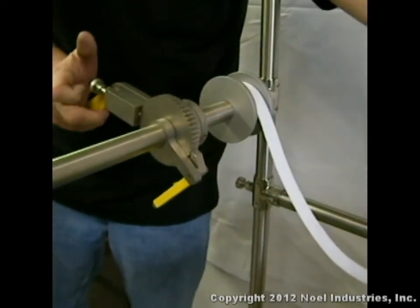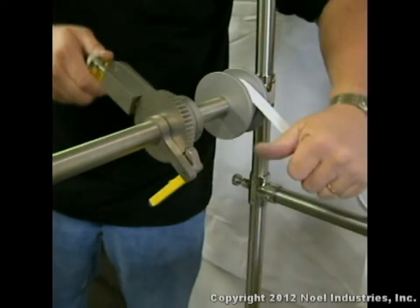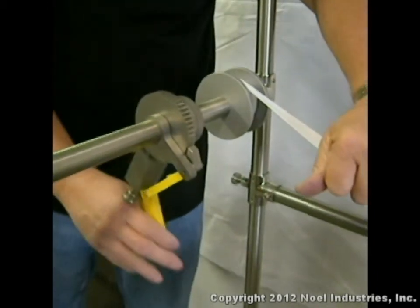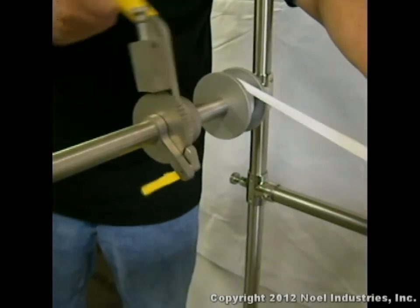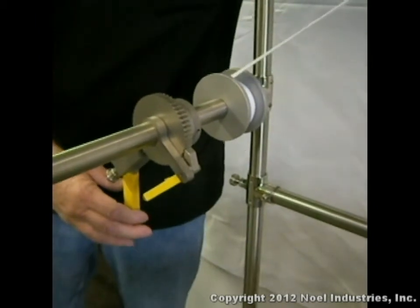To prepare the ratchets for the next procedure, rotate the ratchet knob clockwise 90 degrees. It will snap back into starting position. Then move the ratchet up and down to retract the strap.